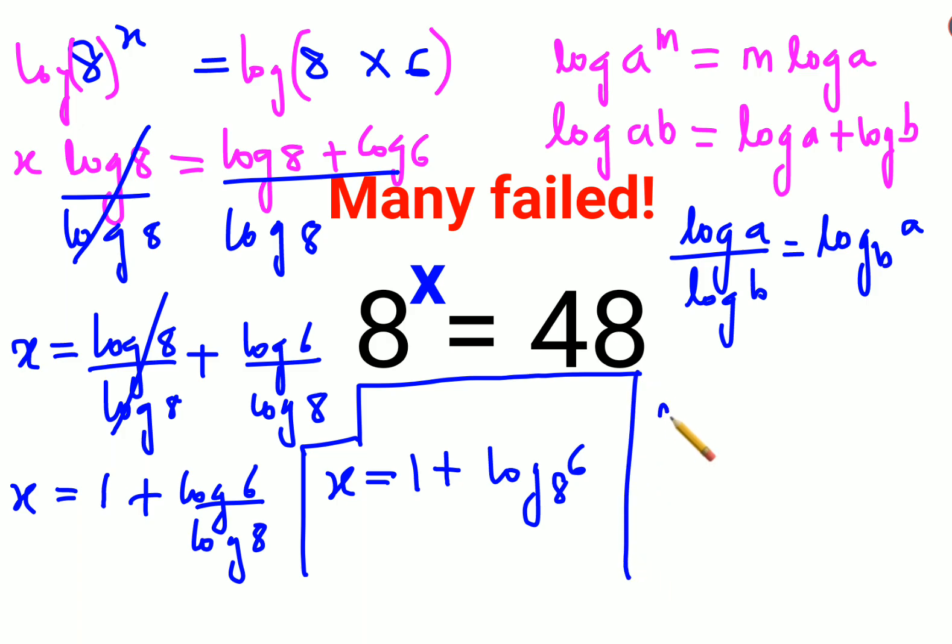Similarly, if they had given you the value of x or they have given you the log table, you just put the value of log 6. Now value of log 6 is 0.778 and value of log 8 is 0.903.